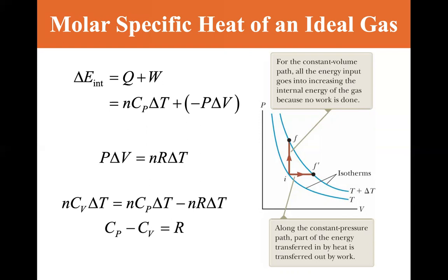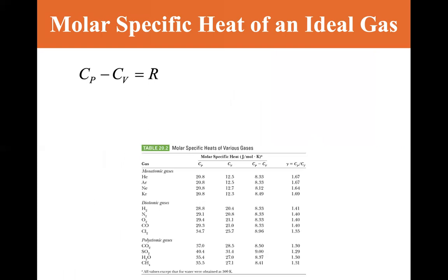nCV delta T is equal to nCp, this is the constant volume side, the change in internal energy, that's equal to nCp delta T minus nR delta T. Well, we see that the n's cancel out and the delta T's cancel out, so we have CP minus CV is equal to r.